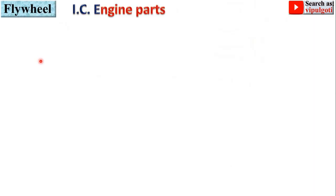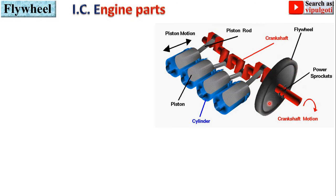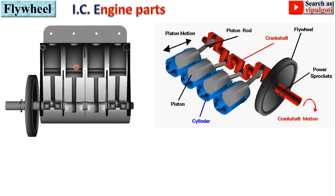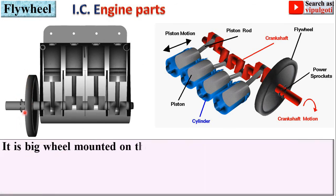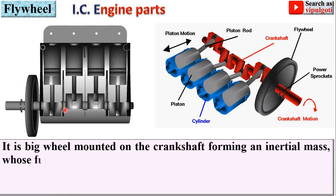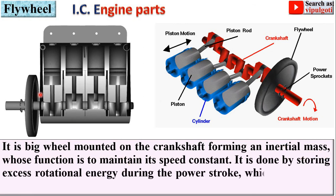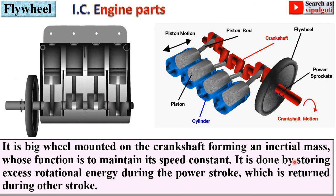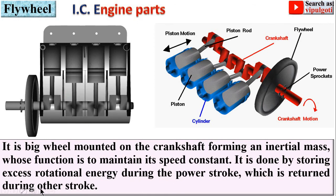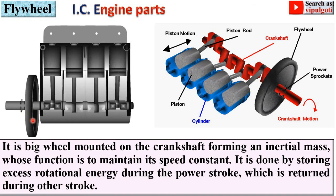Next: flywheel. Here you can see the flywheel in the image and in the animation of the IC engine. It is a large wheel mounted on the crankshaft, acting as an inertial mass whose function is to maintain constant speed. It stores excess rotational energy during the power stroke and returns it during the remaining strokes — the stored energy is released back during the other three strokes.